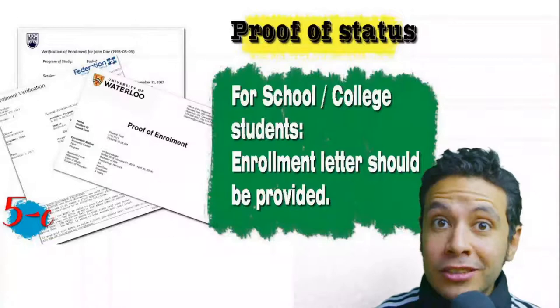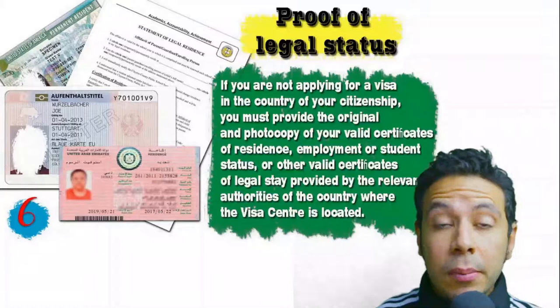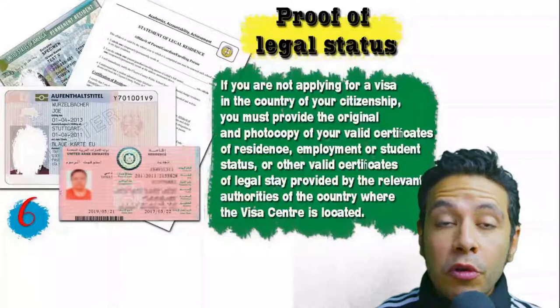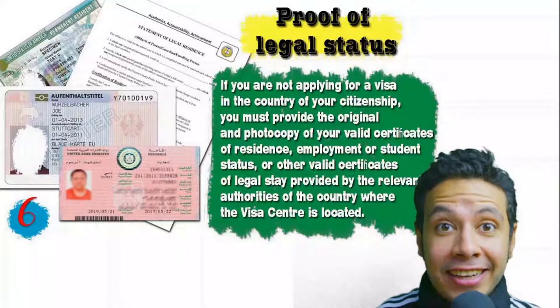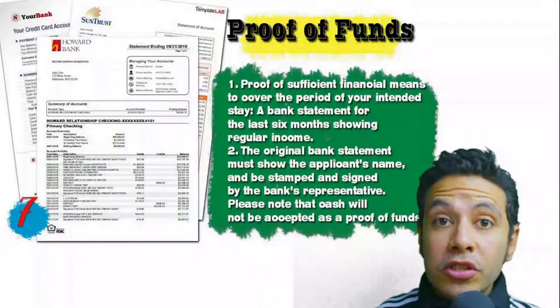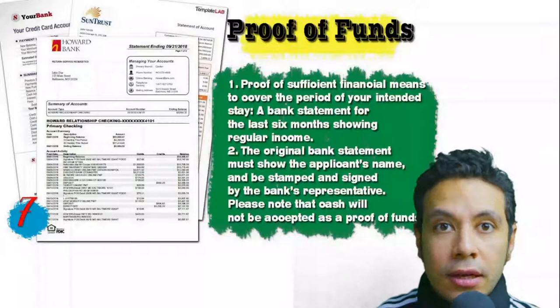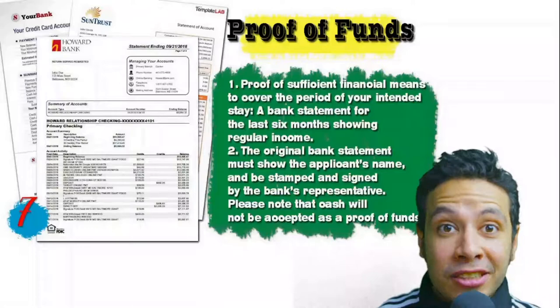If you are applying from a country different from your own, you will need to provide proof of legal status — a certificate of legal residence, or in some cases a valid residence visa for that country. You will also need to provide proof of sufficient funds: a bank statement showing your balance for at least six months, signed and stamped by bank representatives. Cash is not accepted as proof of funds.